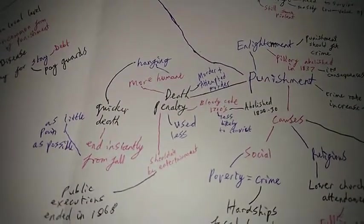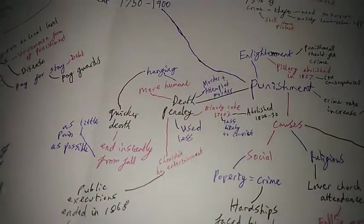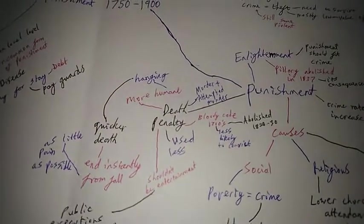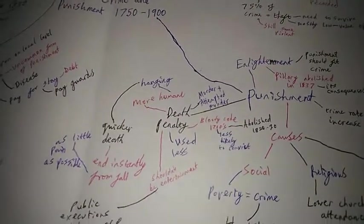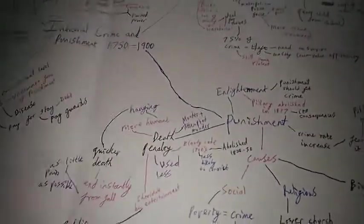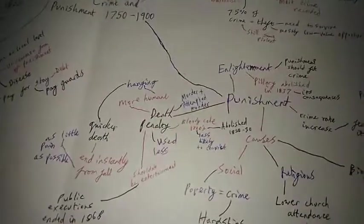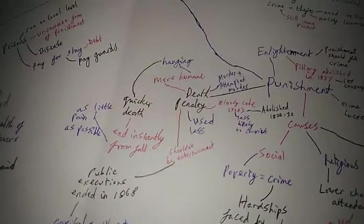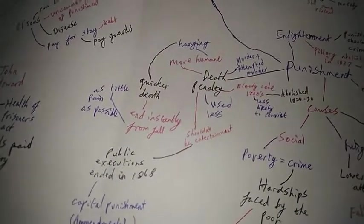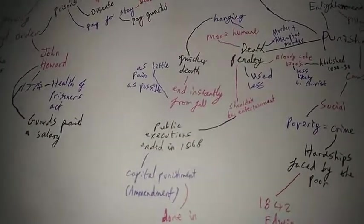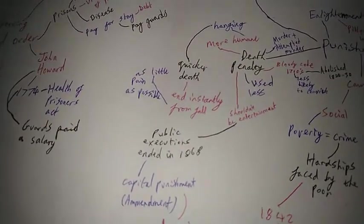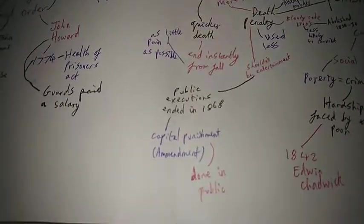The bloody code in the 1700s meant people were a lot less likely to convict people. As less people did crimes that would lead to the death penalty, that was abolished in 1820 to 1830 for being too harsh. Took a long time to figure that one out. Anyway the death penalty shouldn't be used as entertainment they decided. Public executions ended in 1868. They decided we're not putting this in public, it's making the people go a bit evil.